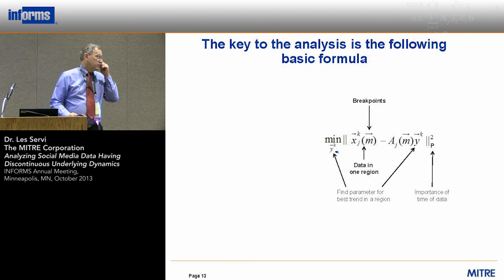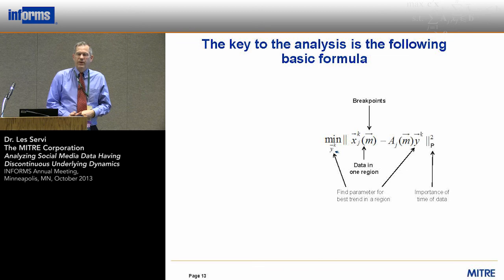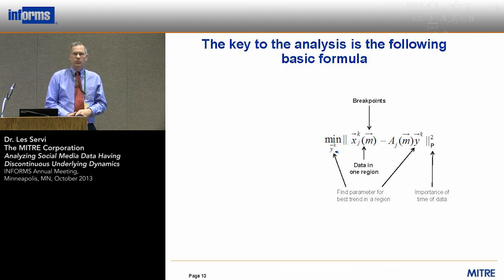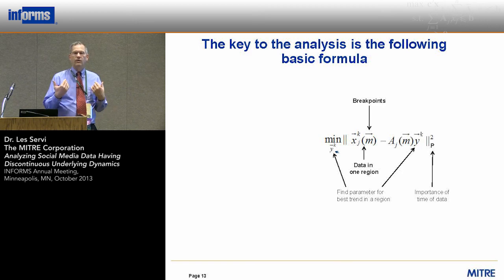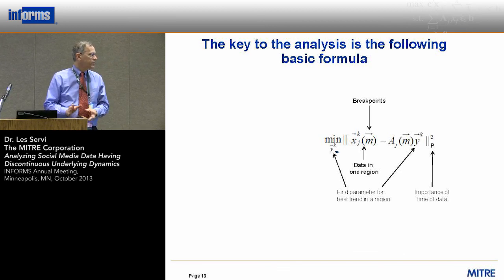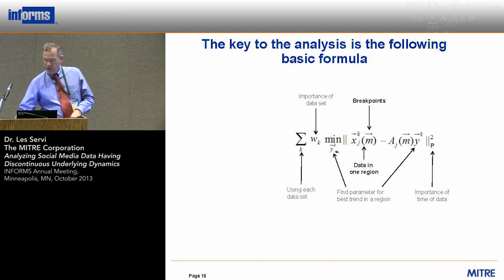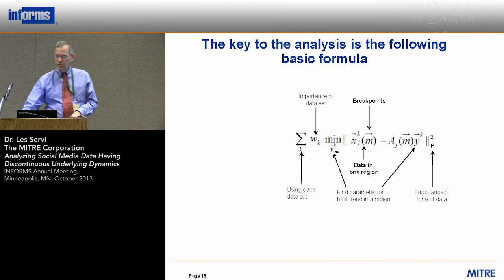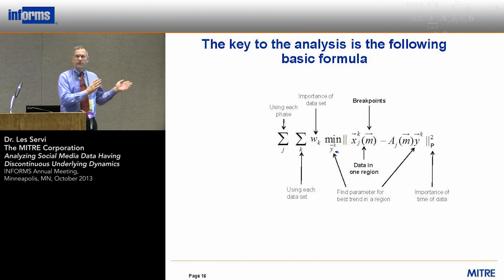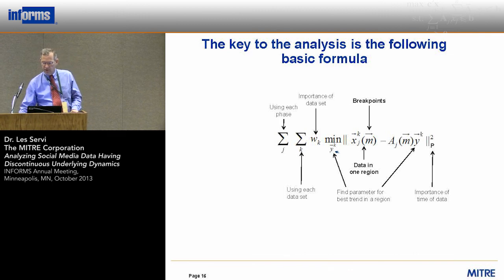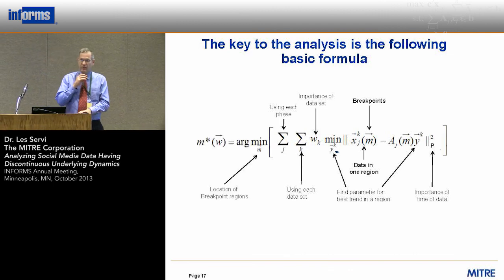There's a problem though: some points in time are more important than others. There are two reasons for that. One is that maybe you're more interested in the recent past. But the more important reason is that some days there may be more Twitter messages than others, so the noise will be different on different days. Therefore you should weight the different times differently, sum over the different emotions, and if you think some emotions should have different weights, you can attach that. There are different periods of discontinuity that you sum over, and then you take the minimum of that whole expression.